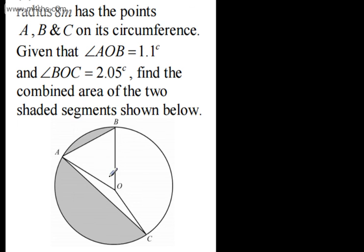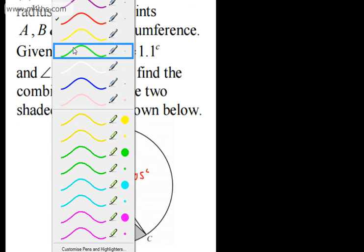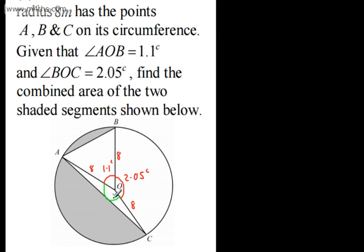We've got this shaded segment and this one. The radius is 8, so each of these is going to be 8. We know angle AOB is 1.1 radians, and angle BOC is 2.05 radians. If we consider what's left over, the remaining angle is going to be 2 pi minus the sum of the other two, which is 2 pi minus 3.15.